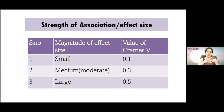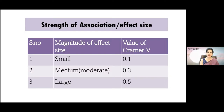We also calculate the effect size in the case of a chi-square test of association. The measure of effect size is called Cramer's V or phi. Phi is used for a two-by-two table and Cramer's V is used if the contingency table is more than two-by-two. We define this as: up to 0.1 is a small effect size, up to 0.3 is a medium effect size, and up to 0.5 is a large effect size.